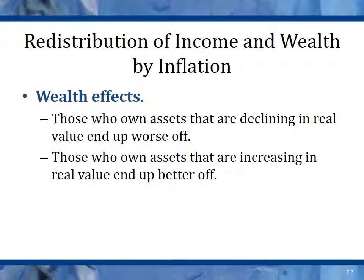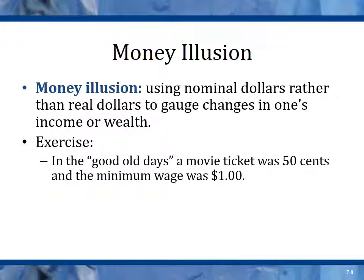Wealth effects: those who own assets that are declining in real value tend to end up worse off, and those who own assets that are increasing in real value tend to end up better off. Real estate often stays ahead of inflation, so it is often seen as a protection from inflation. Cash is the exact opposite — the buying power of a stack of hundred dollar bills is always going down as inflation goes up, so cash is an asset that is always declining in real value.